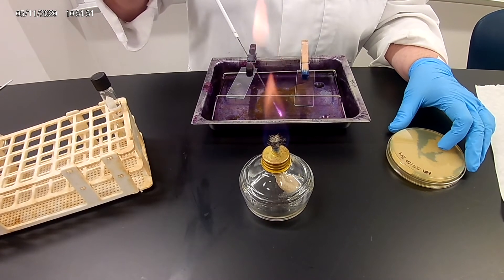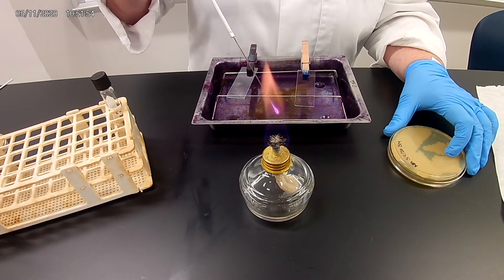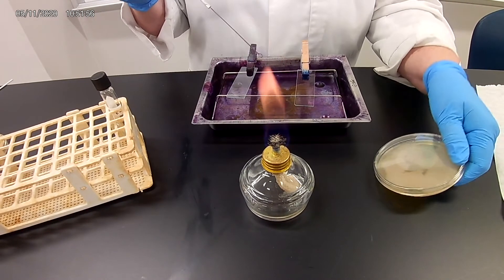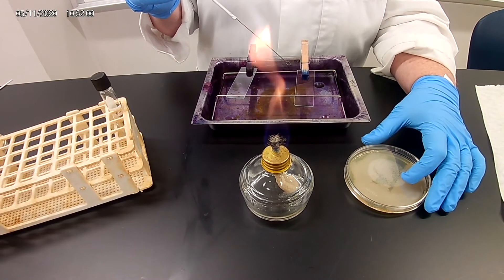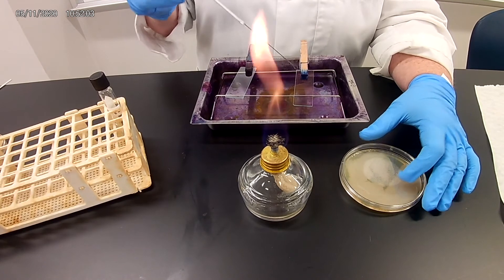The other way is coming from a solid medium. So we have a petri dish here. We have flamed our loop, let it cool for a bit. This organism on the petri dish is Bacillus megaterium.